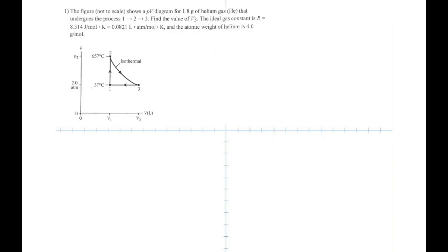The first process is from state 1 to 2, which is at constant volume. Then 2 to 3 is an isothermal process. The third process from 3 to 1 is an isobaric process, which is at constant pressure. You have to find the value of V3, the volume at state 3.